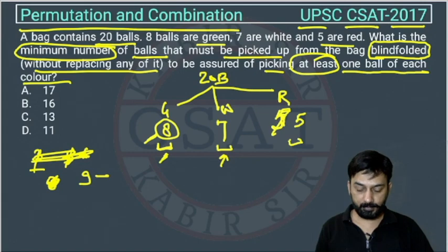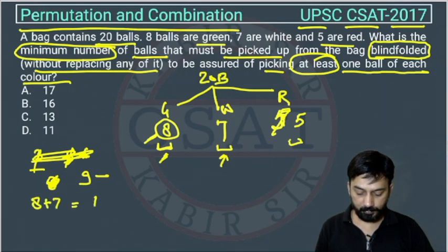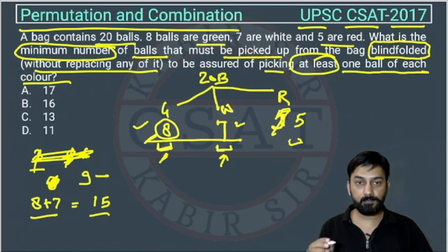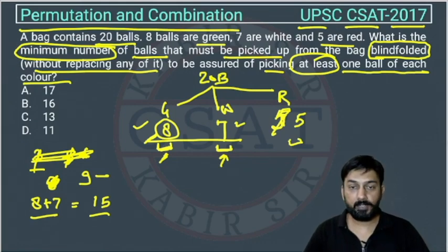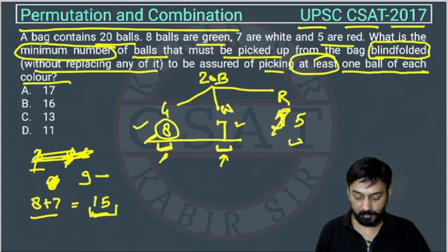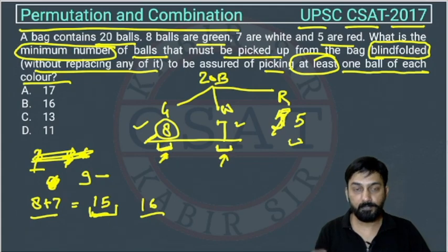Similarly, we take the first maximum (8) plus the second maximum (7): 8 plus 7 equals 15. If we pick 15 balls, it is possible that 8 are green and 7 are white — still no red ball. So 15 is not enough. If we pick 16 balls (15 plus 1), then 8 will be green, 7 will be white, and the one remaining ball must be red.